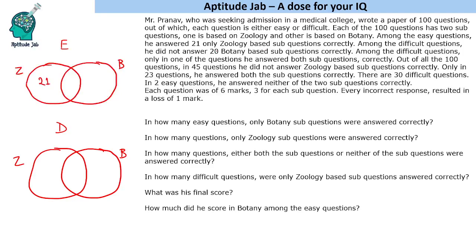Among the difficult questions, he did not answer 20 botany-based sub-questions correctly. This means the region outside botany in the difficult diagram totals 20. Also, among the difficult questions, only in one question did he answer both sub-questions correctly. So in the difficult questions Venn diagram, the intersection value is 1.